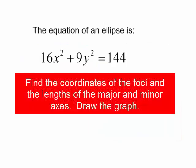Let's try another one. The equation of an ellipse is 16x squared plus 9y squared equals 144. Find the coordinates of the foci and the lengths of the major and minor axes. Draw the graph.